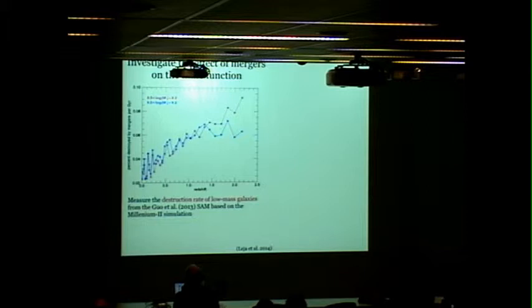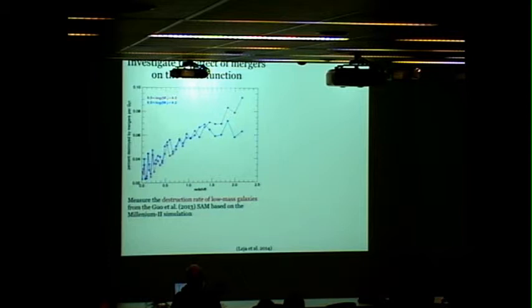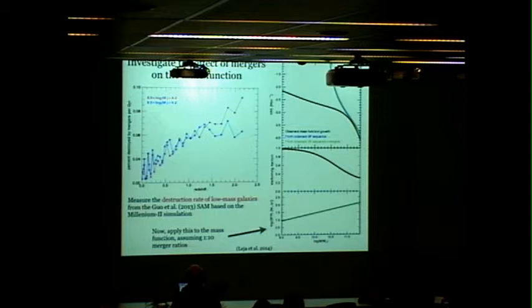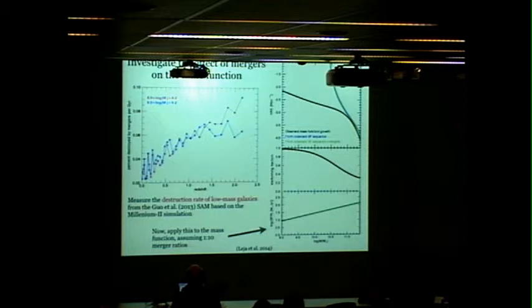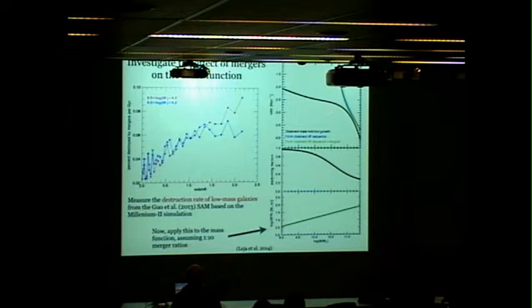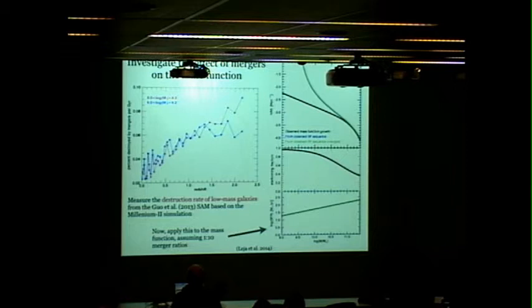We investigate these by going into the Guo et al. 2013 SAM and measuring the destruction rate of low mass galaxies. The destruction rate is moderate, about 8-9 percent per gig a year at redshift 2, dropping to 2-3 percent locally. If you apply this to the mass function, assuming 1 to 10 merger ratios, this modest merger rate has almost no observable effect at the low mass end. The merger rate isn't sufficient to reconcile things. You'd have to increase merger rates by a factor of 100.